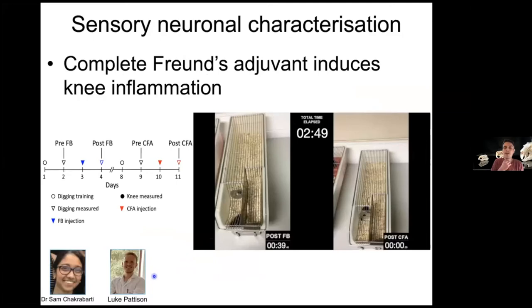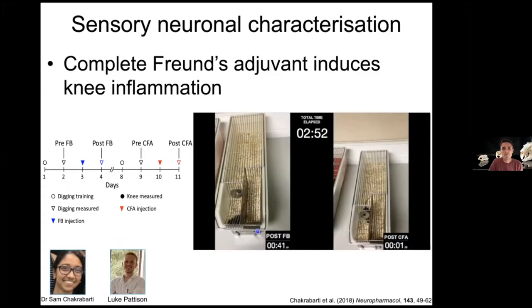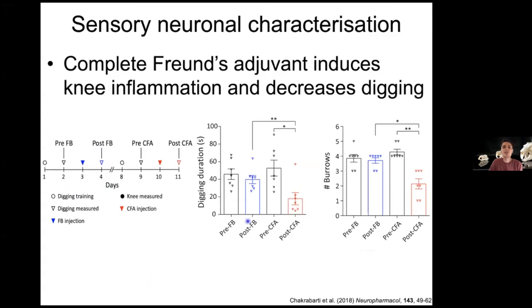Sam and Luke in the lab developed a new behavioural assay looking at spontaneous pain: if you are in pain you will be less physically active. Animals are placed in chambers and we measure their digging behaviour before and after injections. A mouse with fast blue digs for almost a minute in three minutes; a CFA-injected mouse does almost nothing. Quantifying this, digging duration is not affected by fast blue alone, but CFA produces a big decrease in time spent digging and in the number of burrows dug, which we infer reflects the animals being in pain.